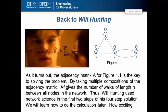It turns out that the adjacency matrix A for figure 1.1 is the key to solving the problem. To solve the second part of the problem, taking multiple compositions of the matrix gives the number of walks of length N between all nodes in the network. So what we would do is we would take the adjacency matrix, which you now should know how to transcribe, and multiplying it by itself three times gives us the number of walks of length 3 between all of the nodes in the network. Thus, Will in Good Will Hunting used network science to find the first two steps of his four-step solution. We're going to learn how to do the actual calculations later in the course.